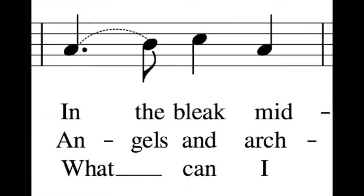The last thing we might come across is an intermittent tie or slur. These are common with church hymns with two or more verses for singing. You will find that different verses have different numbers of syllables — in one verse you may be singing a long note and in another verse you would split the note into two shorter ones.